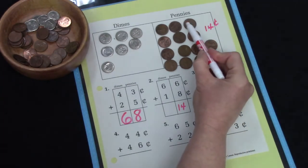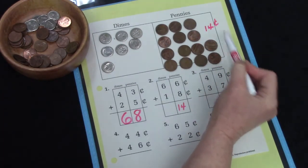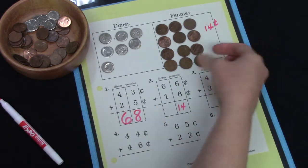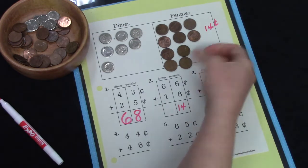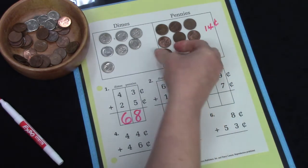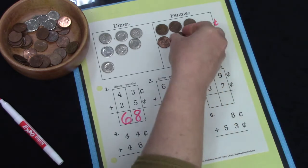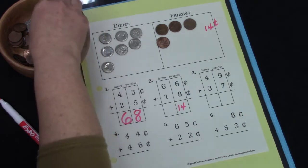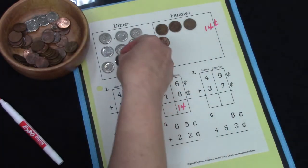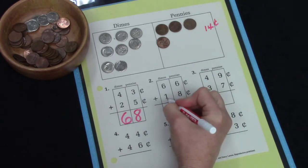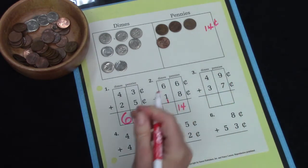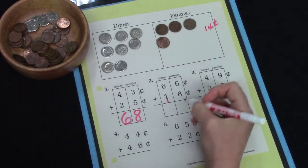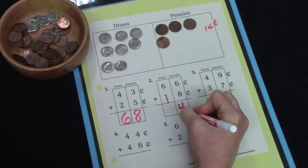I'm going to need to trade some of these pennies for a dime. 1, 2, 3, 4, 5, 6, 7, 8, 9, 10. I am going to take off 10 pennies and add a dime. I have put an extra dime on this side. How many pennies do I have left? 4.